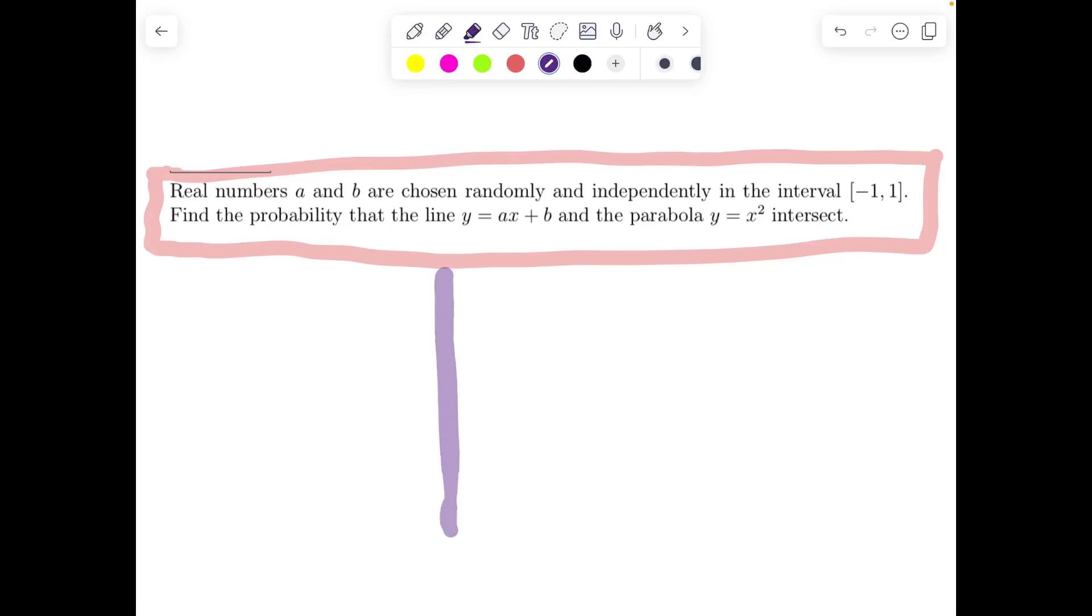Good afternoon, all of you. Here is a beautiful problem linking probability with coordinate geometry. Real numbers a and b are chosen randomly and independently from the interval [-1, 1]. Find the chance that the line y = ax + b and the parabola y = x² intersect.